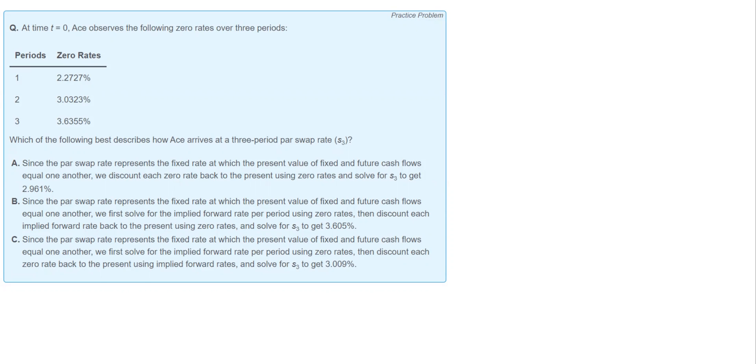Okay, so let's use this quick formula. The quick formula that we're going to use is the fixed rate on a swap is equal to one minus the last discount factor over the sum of the discount factors. Okay, that's our quick formula. That's what we're going to do.